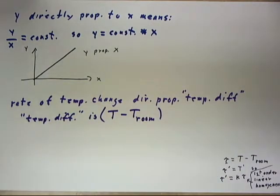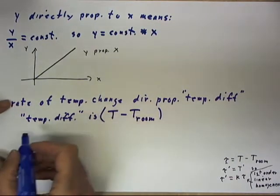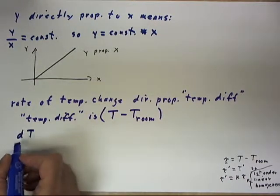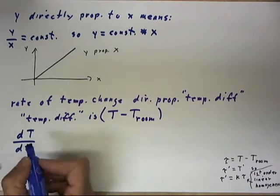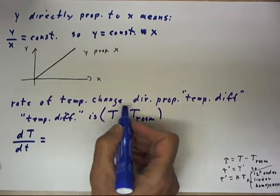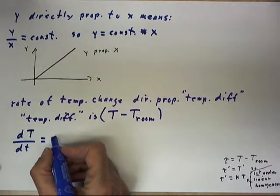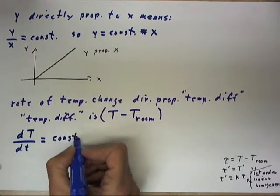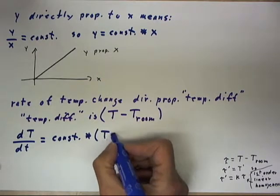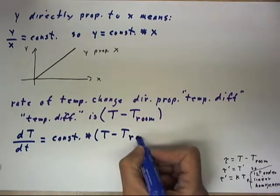Now, if the rate of temperature change is directly proportional to this, this means that, what's the rate of temperature change? That's the rate of change of big T temperature with respect to little t time, and that, if it's directly proportional to temperature difference, has to equal some constant times the temperature difference. What's the temperature difference? That's T minus T room.